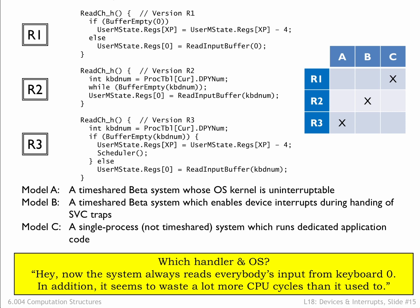Here's the next message: 'Now the system always reads everybody's inputs from keyboard 0. Besides that, it seems to waste a lot more CPU cycles than it used to.' R1 is the only handler that always reads from keyboard 0, so we can eliminate rows 2 and 3. The R1 handler wastes a lot of cycles looping while waiting for a character to arrive, and the implication is that that was a big change for the user since they're complaining that running R1 is wasting time compared to their previous handler. If the user had been running R2 on a Model B system, they're already used to the performance hit of looping and so wouldn't have noticed a performance difference when switching to R1. So we can eliminate Model B from consideration, and this message came from a user running handler R1 on a Model A system.